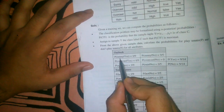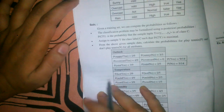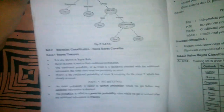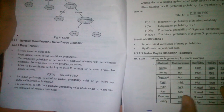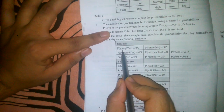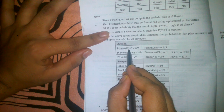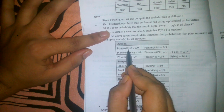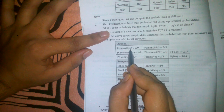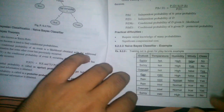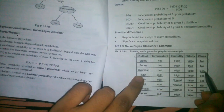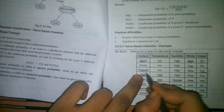We need to find the probability of each distinct attribute paired with each class. For example, the distinct attributes in the first column are sunny, overcast, and rain. We calculate the probability for each of these with respect to the class — starting with P(sunny | yes).